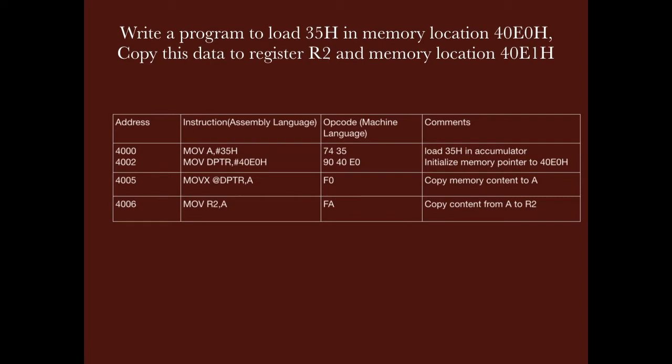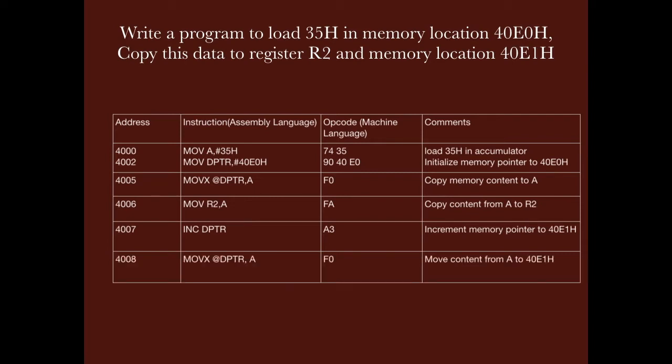Then we copy the same data to the R2 register. Then we increment the memory pointer to 40E1H and copy the data from the accumulator to 40E1H. So thereby we have copied 35H into 40E0H, 40E1H, and the register R2.